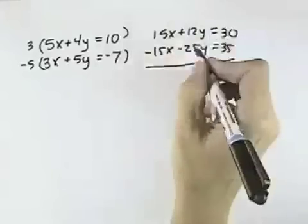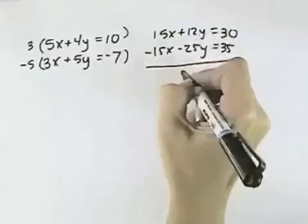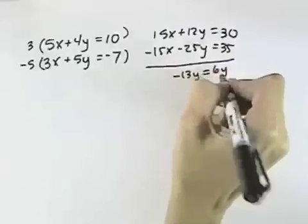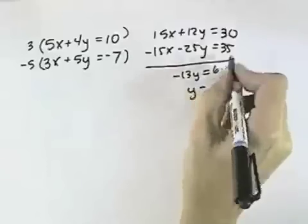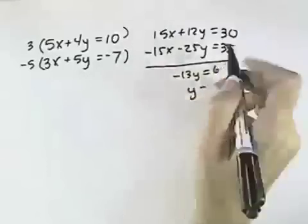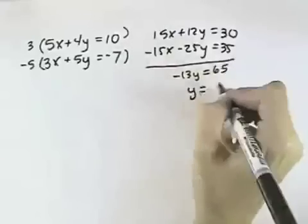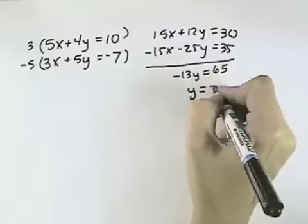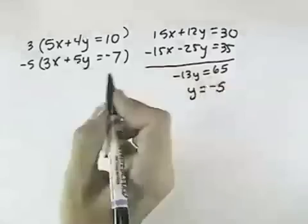So that when I add these together, the x's drop out. The y's, I have negative 13y equals 65, and dividing both sides by negative 13, 65 divided by negative 13 will be negative 5. So y equals negative 5.